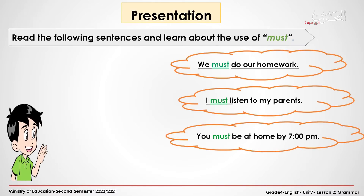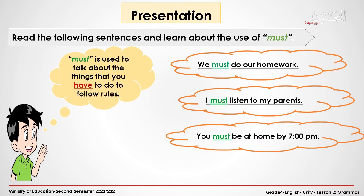Read the following sentences and learn about the use of 'must.' We must do our homework. I must listen to my parents. You must be at home by 7 p.m. 'Must' is used to talk about the things that you have to do to follow rules.